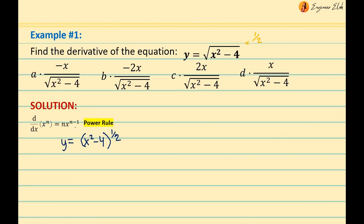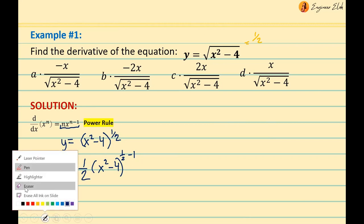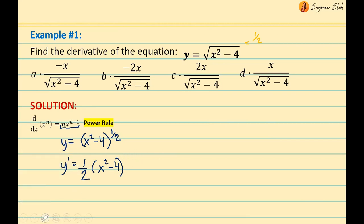Now we can use the power rule since it's in the form of x raised to n, where (x² − 4) is our x and one-half is our n. Applying the formula: y prime equals the coefficient n, which is one-half, times (x squared minus 4) raised to n minus 1. Since n is one-half, n minus 1 equals one-half minus one, which is negative one-half.